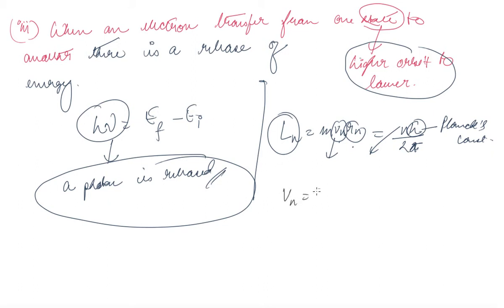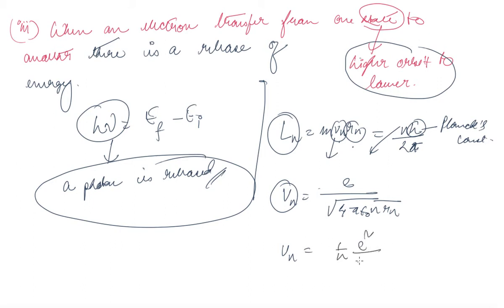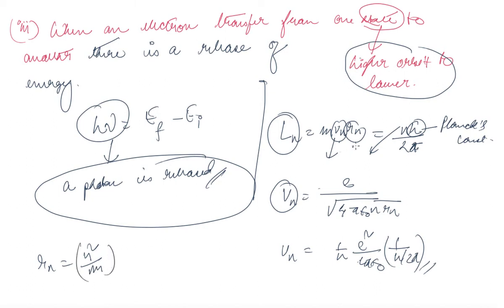Looking at the relation, v_n is equal to e squared upon 4·pi·epsilon_naught times n times r_n. Combining these two equations, v_n is given by 1/n times e squared over a constant term. The radius r_n is given by n squared upon m. By substituting all the values, you can derive the full result.